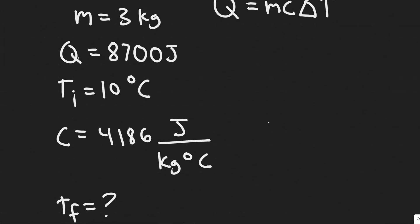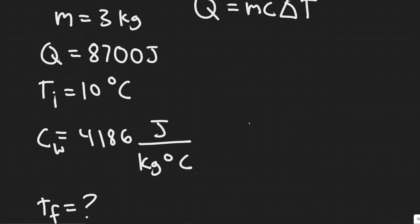So in this case, we're dealing with water. So C, we call it CW, which is the specific heat capacity of water, is 4,186 joules per degree Celsius kilogram. So kilogram per joule per kilogram degree Celsius.